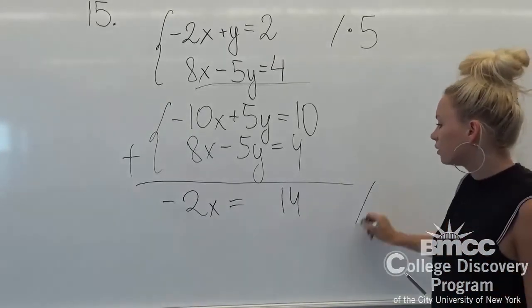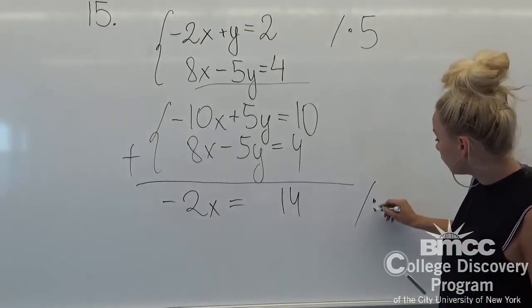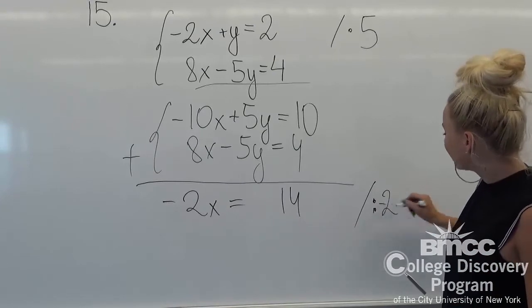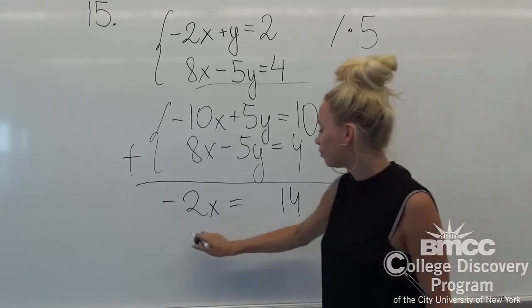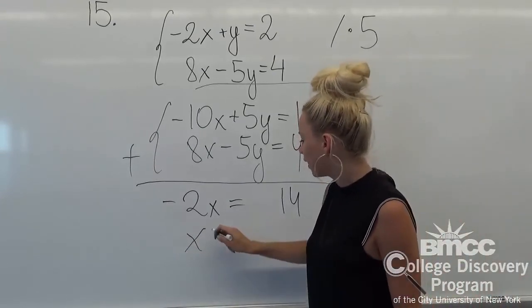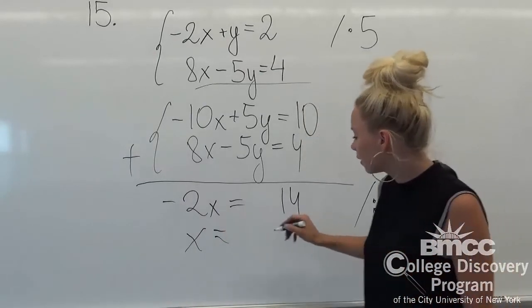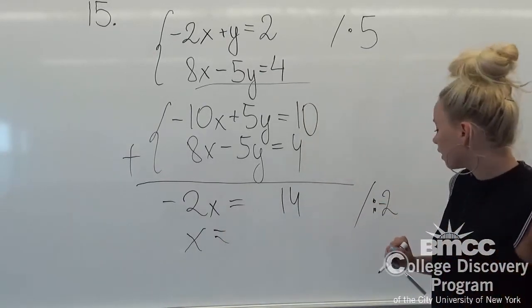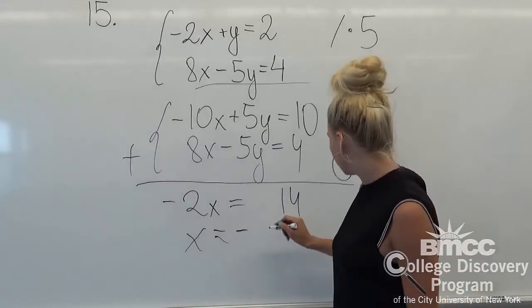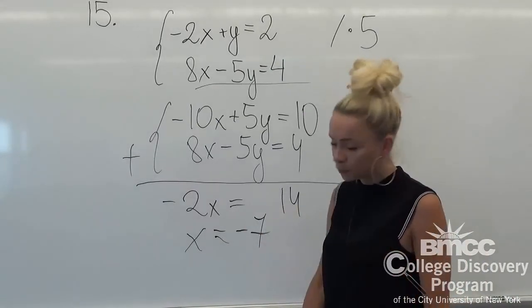So right now we're going to divide it by negative 2. So from the first term, we're going to have left x. And from our second term, 14 divided by negative 2 is equal to negative 7. We're done.